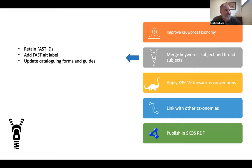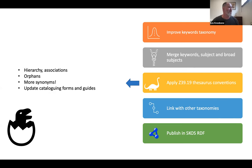Second step: once cleaning up the long tail was done, it was time to merge the vocabularies. There was some hesitation around the team about merging the so-called subjects with the keywords. I mitigated those concerns by saying we're keeping the FAST IDs in terms that had them, so we'll always know they came from FAST. I also brought in minor data from FAST like alternative labels that hadn't been imported before, since we were starting to store synonyms for the first time at APO. Once the merge was complete, I applied thesaurus conventions - full hierarchy, associations, cleaning up orphans, and more synonyms.